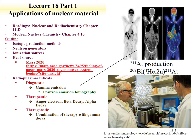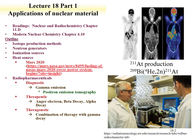Through positron emission tomography, a positron is emitted by the isotope. That positron interacts with matter, producing two photons at 511 keV, each going 180 degrees away from each other. This provides the ability to obtain detailed images, such as shown here.